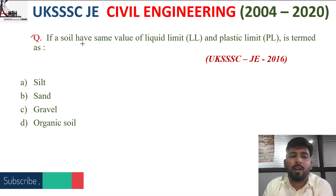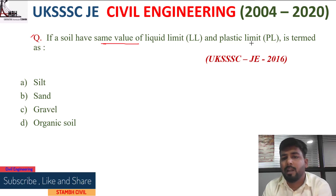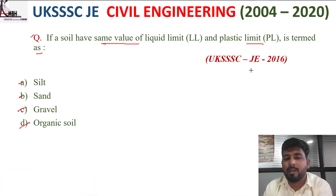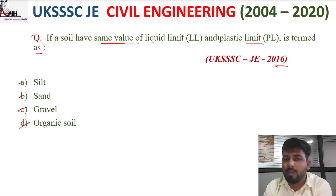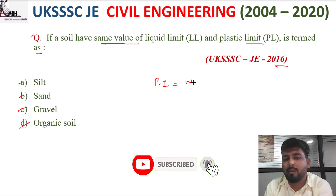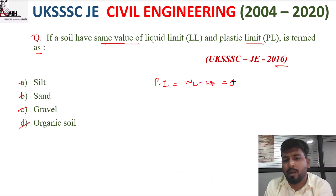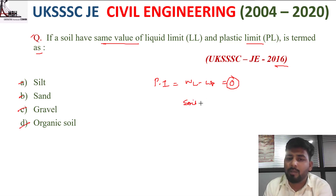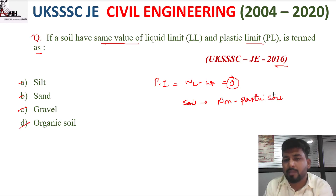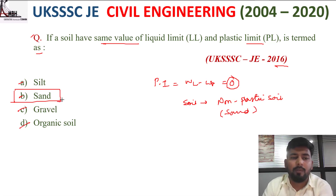Next question: if a soil has the same value of liquid limit and plastic limit, it is termed as — option A silt, B sand, C gravel. If liquid limit minus plastic limit equals zero, the plasticity index is zero, meaning it is a non-plastic soil, which corresponds to sand.